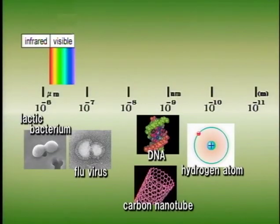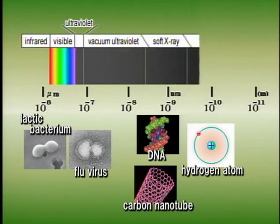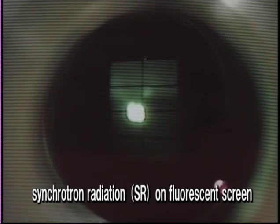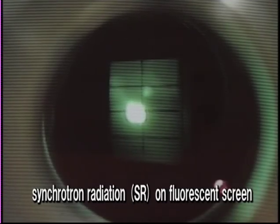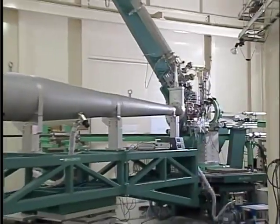Ultraviolet light has a wavelength shorter than visible light, and X-ray wavelengths are even shorter. In order to observe atomic and electronic structures using a small amount of material, extremely bright light beams in the X-ray region are necessary. Spring-8 generates these bright light beams with short wavelengths, which allows scientific research to be performed in various fields at the atomic and electronic levels.